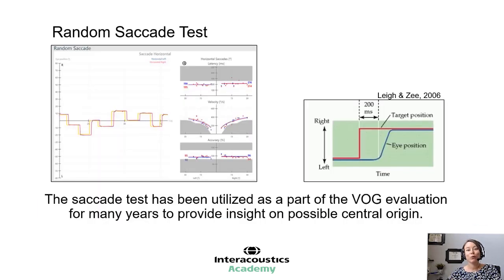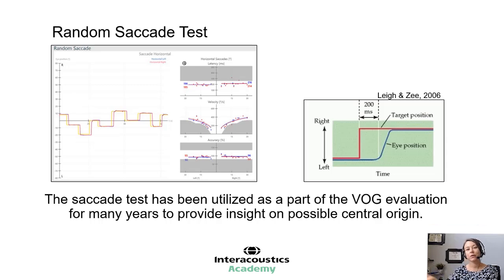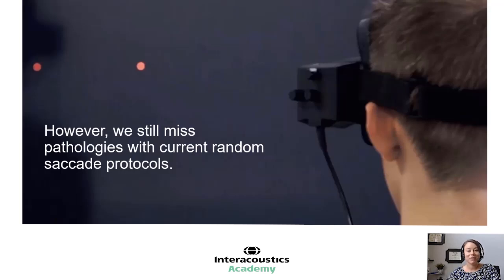Looking at this population is not new for us. Especially through our ocular motor testing, our main goal when using ocular motor tests is to determine whether there is anything of central origin we should be concerned about. Here is an example of an ocular motor test that we perform on a daily basis — it's called the random saccade test. A saccade is when you change the focus of your fovea from one target to another quickly. It's a reflexive part of human nature that we can quickly look at a target or a stimulus that's moving. We've used this for many years to help us decide whether the patient has anything centrally that we need to be concerned about.